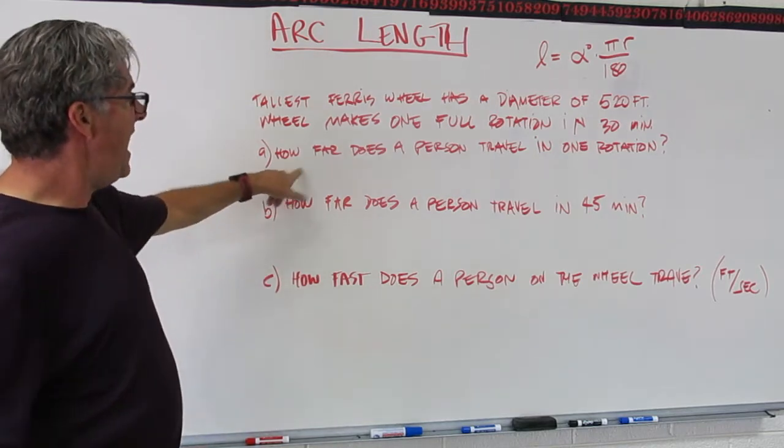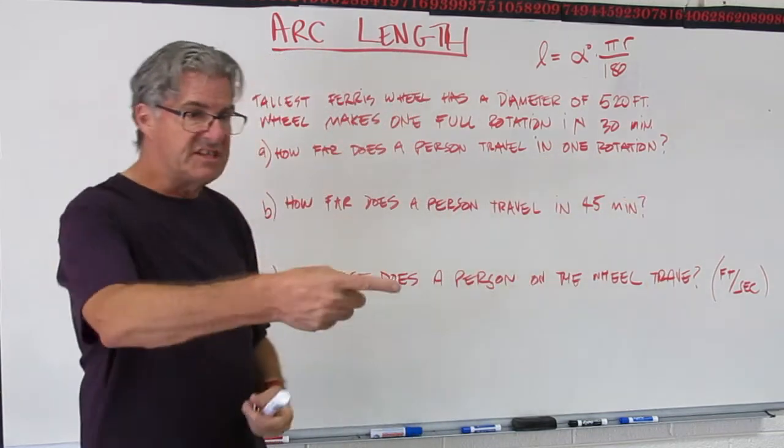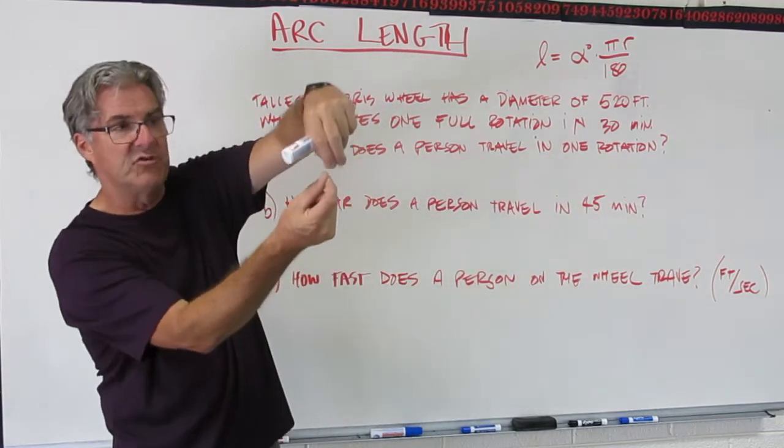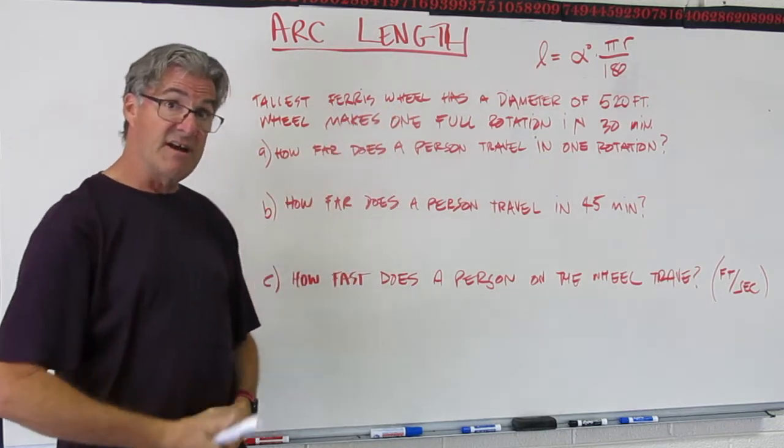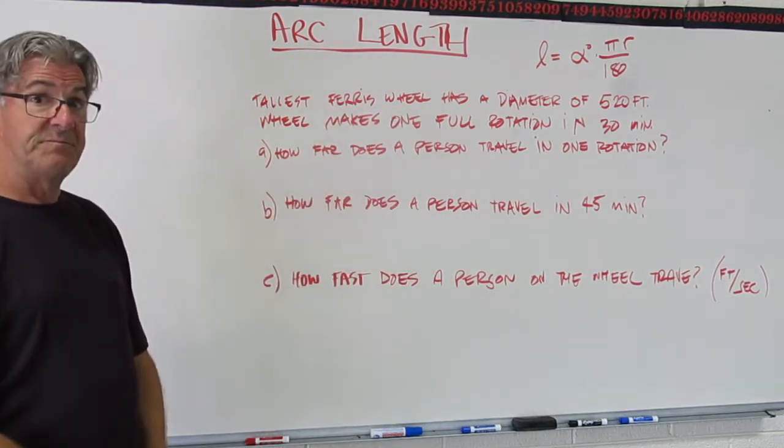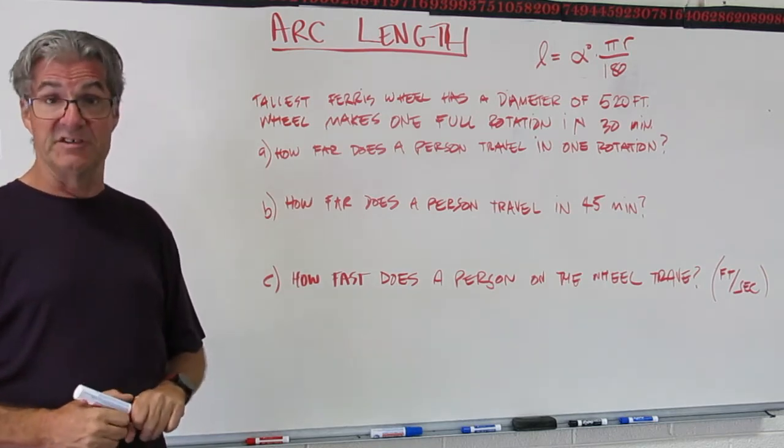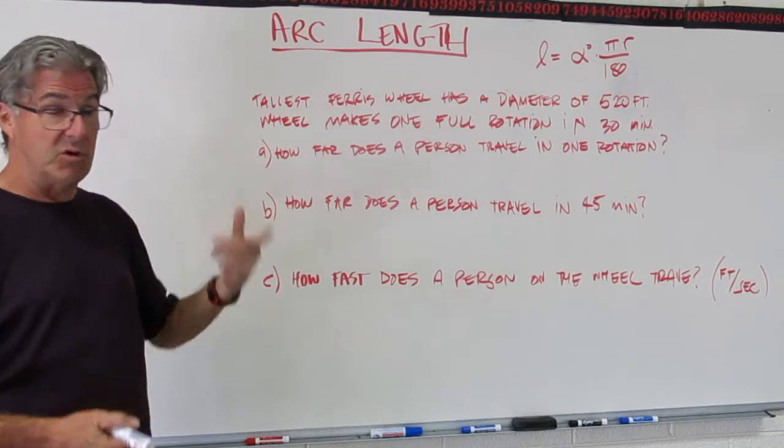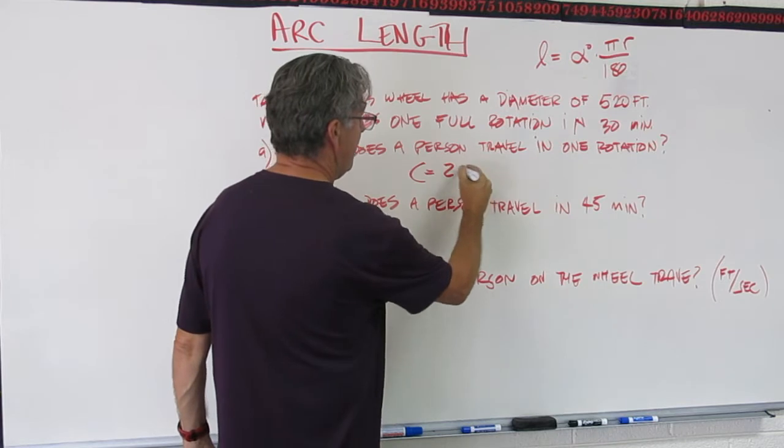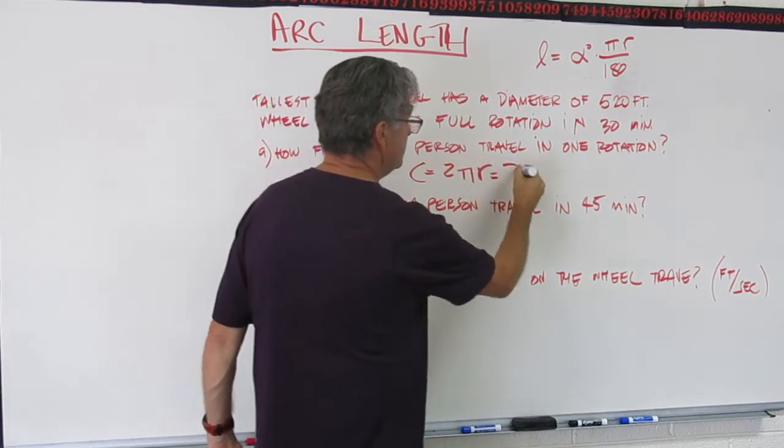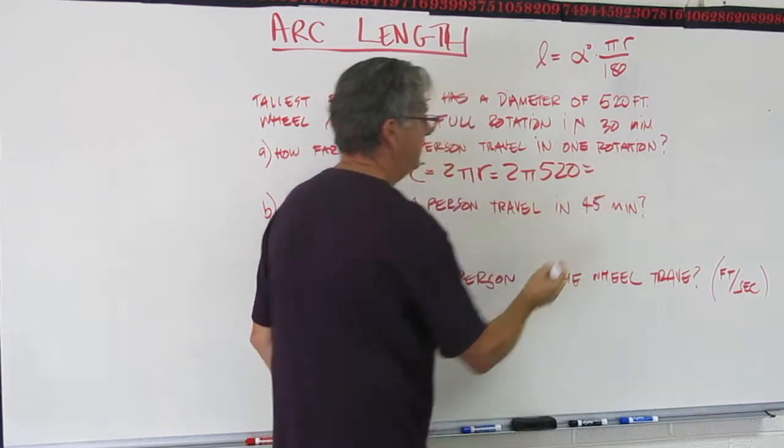First question. How far does a person travel in one rotation? So this is the distance around. If you dragged a string around and straightened that out, that would be the distance. So go ahead and pause the video right now and do that calculation. This is a straightforward circumference calculation. We don't have an arc yet because we're going all the way around in one rotation. That's just going to be C equals 2πR, which equals 2 times π times 520.